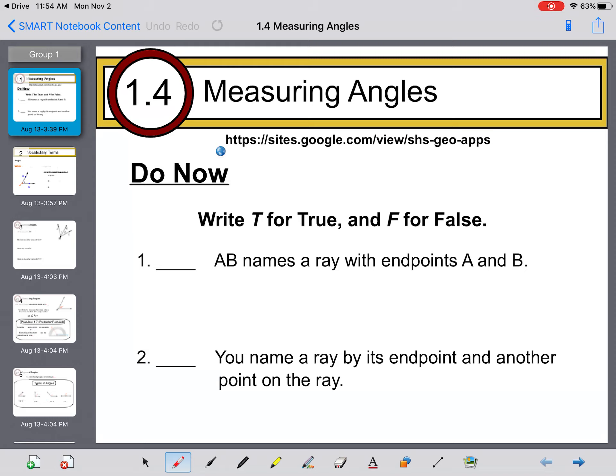The Do Now asks you to write T for true and F for false. Number one: AB names a ray with endpoints A and B. Here's ray AB. The key word they're focusing on is endpoint. Although A is an endpoint, B is not, because we have this arrow here which shows that this ray will go on forever in this direction. Therefore, this is false.